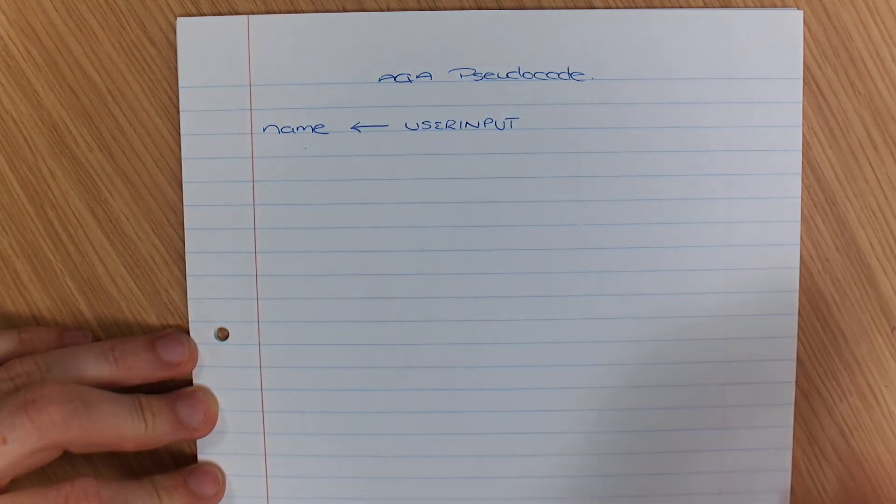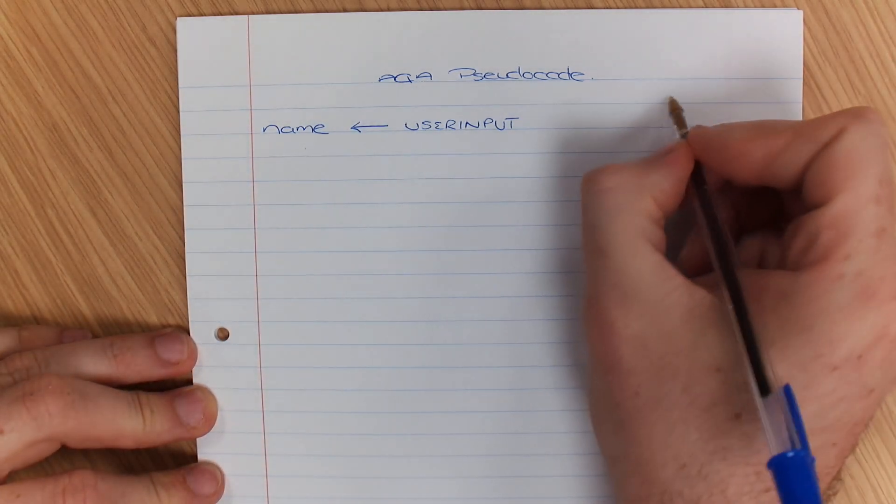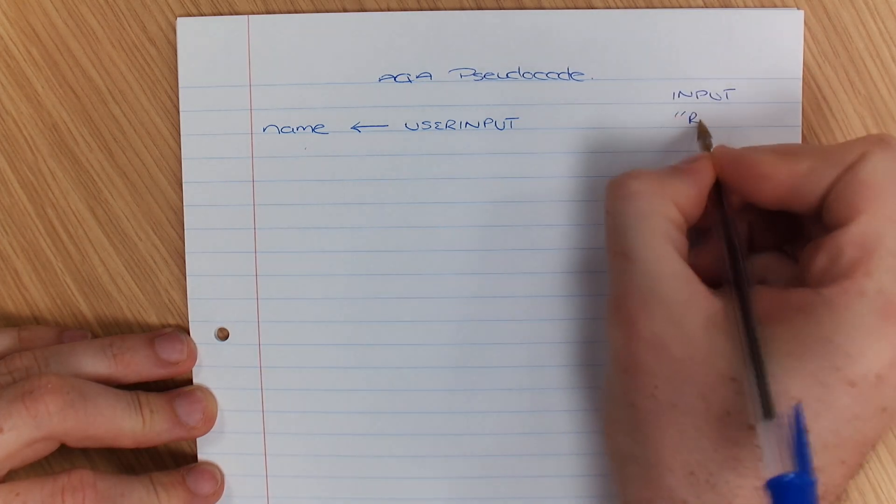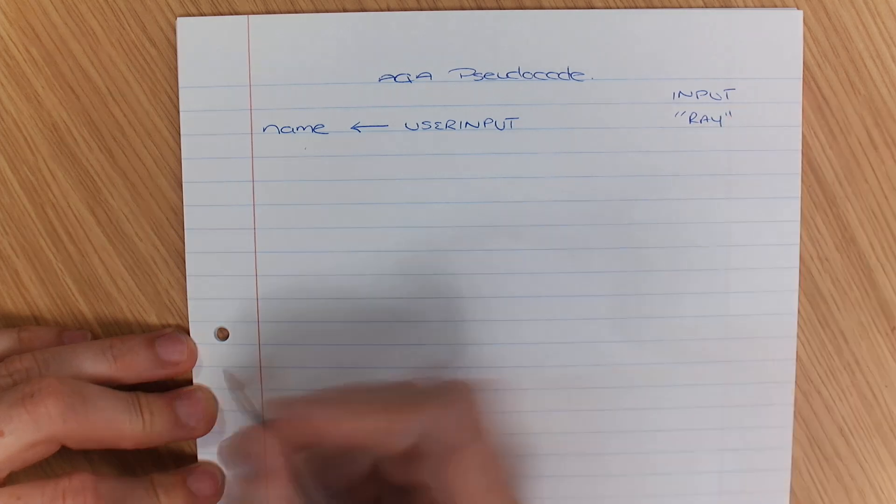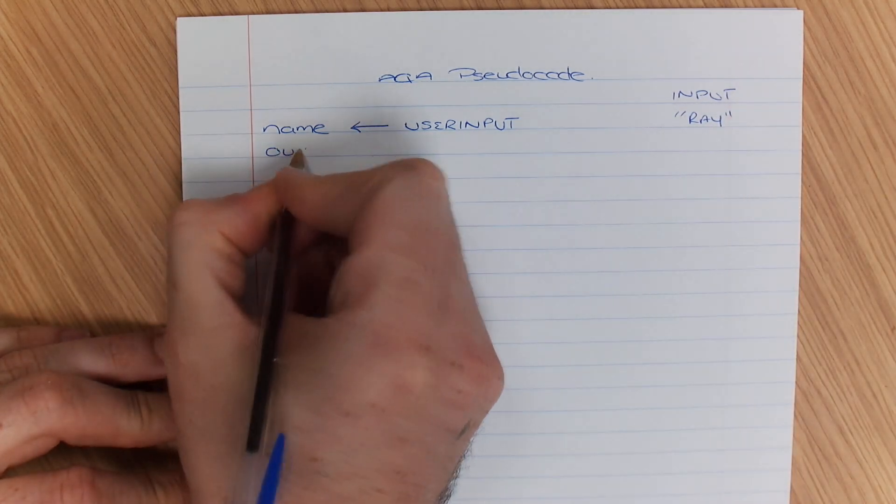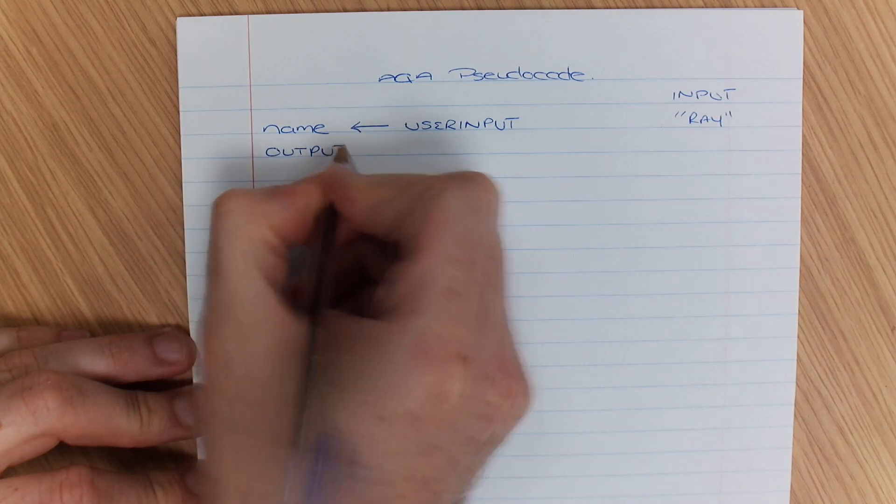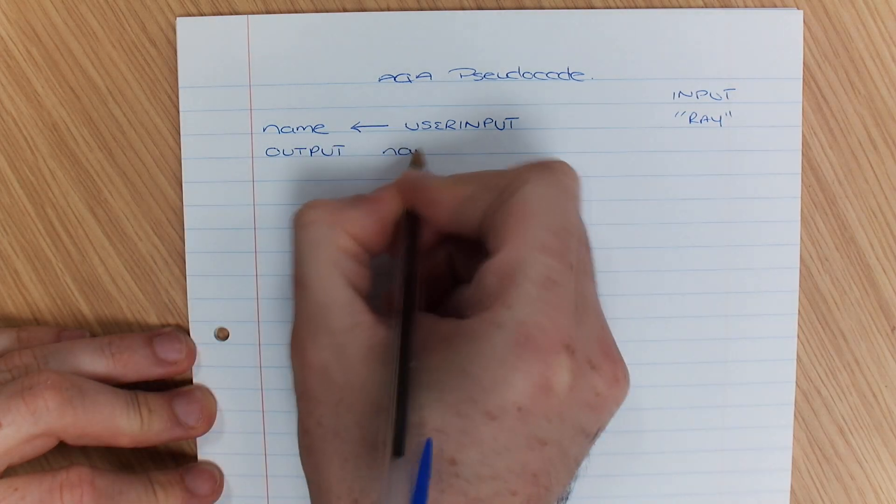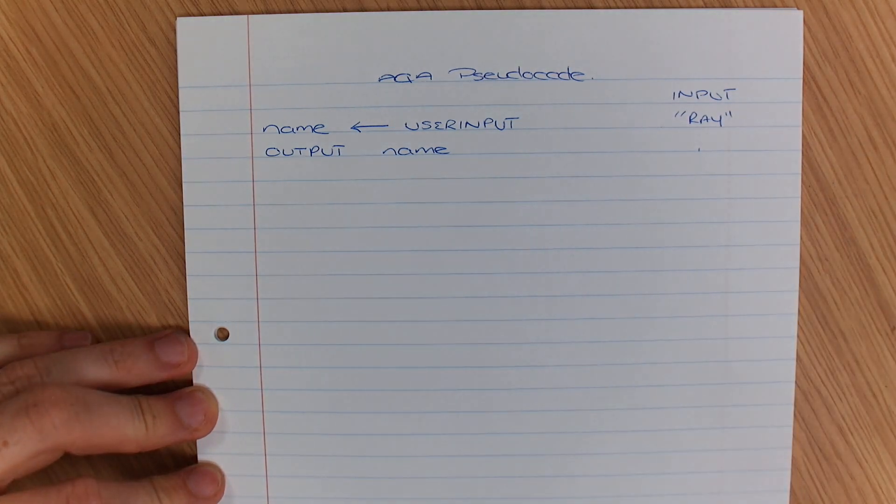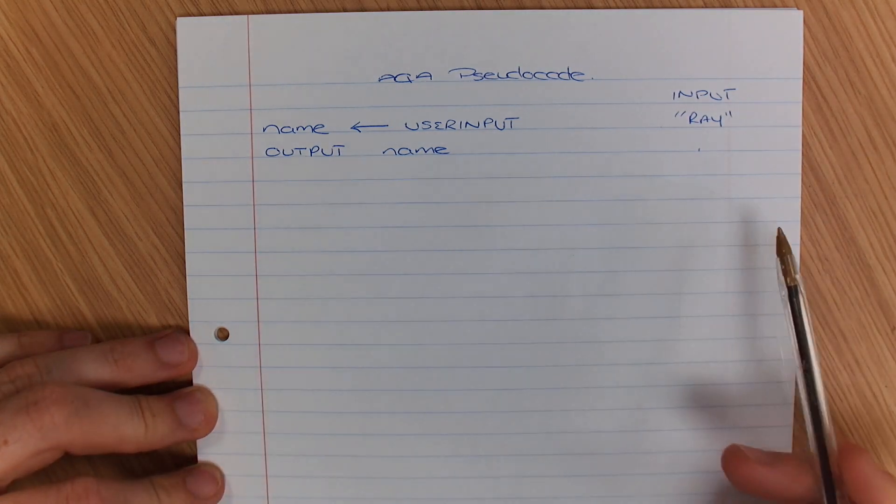So if at that point I typed in, imagine my input over here was the string ray, if I was to just go output name at this point, it would output ray. So just a quick recap. So that's how you do variables.